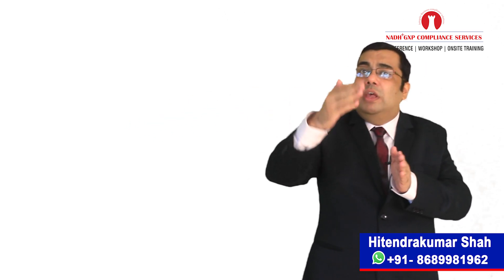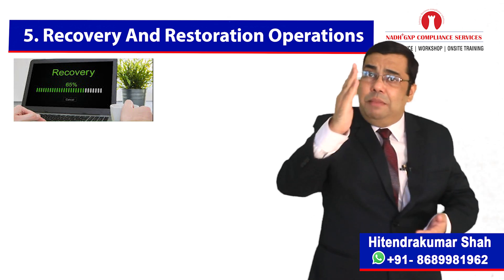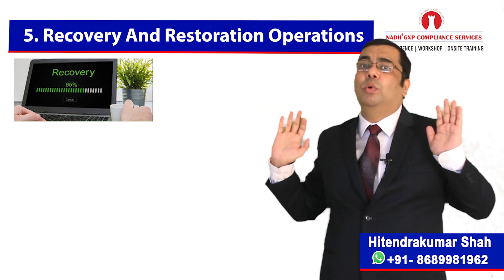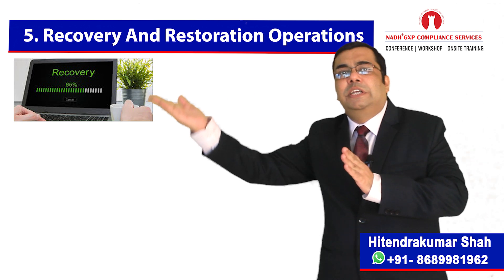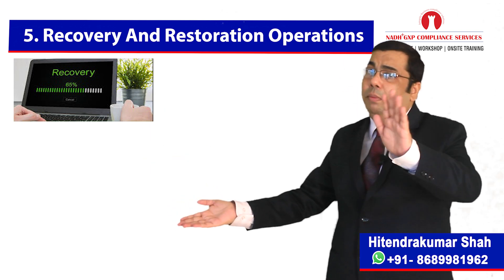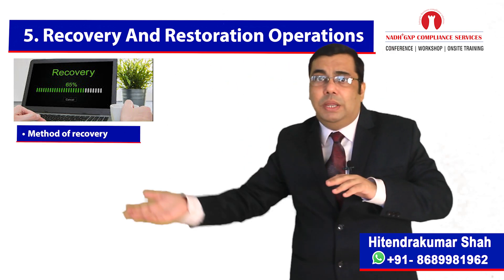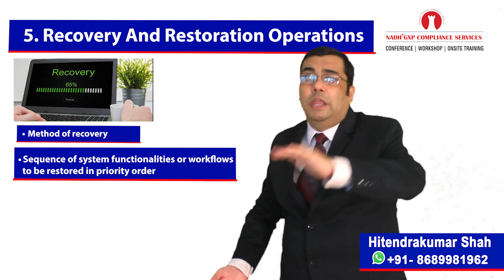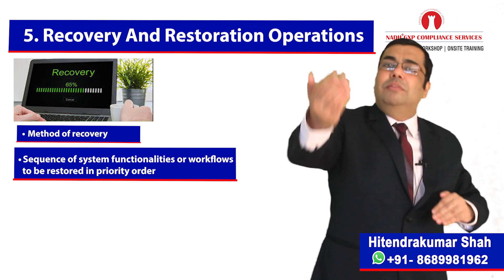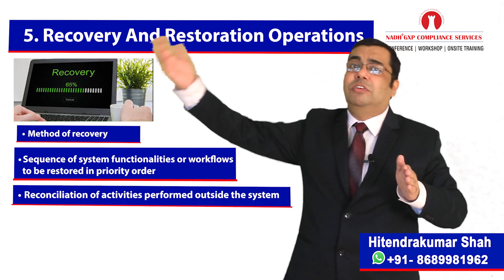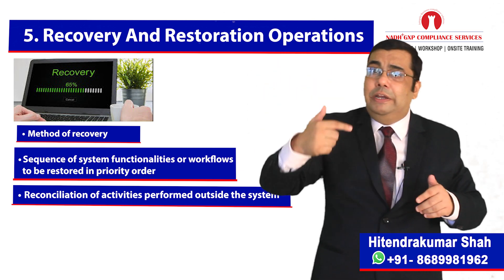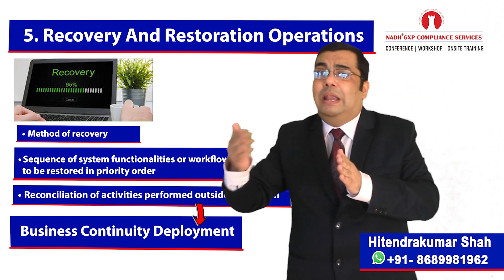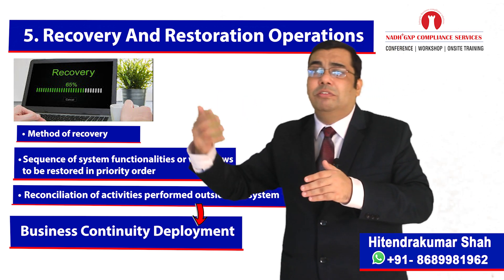The next element is recovery and restoration operations. As per this element, we have to set a clear process for prioritizing system recovery before returning our CGXP computerized system to normal activity. The process may include the method of recovery, the sequence of system functionalities or workflows to be restored in priority order, and reconciliation of all activities performed outside the system — for example, entries of data managed during an interim manual or automated process.